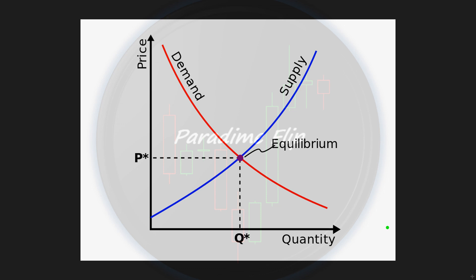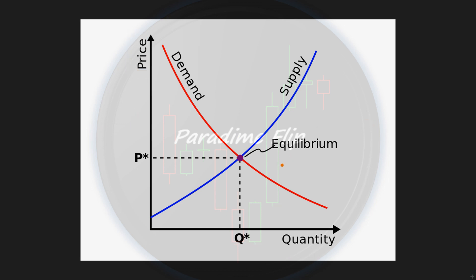We're going to go back to the basics of supply and demand. It's really as simple as this graph right in front of you, where you have price and quantity, and you have your demand and supply lines. Most of you should be familiar with this — it's what everyone learned in Economics 101 and it is basically the core of what's driving price in the background.